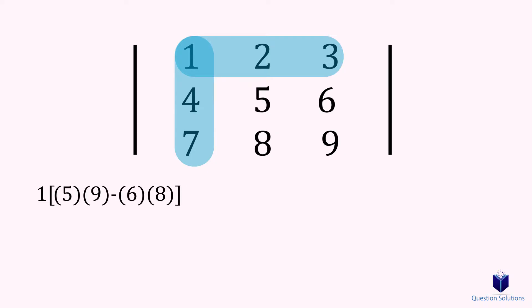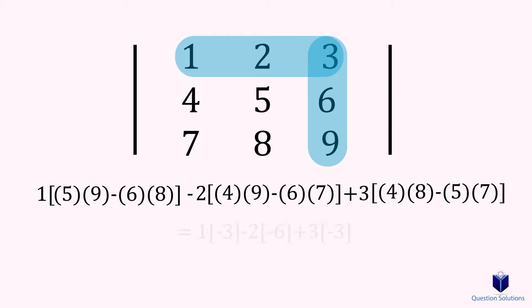Next, we cover the next column, and the sign switches. The intersecting number becomes 2. Cross multiply and subtract as before. Lastly, we will cover the last column, and the intersecting number becomes 3. This time, the sign switches back to positive. Solve and simplify and you will get the answer.